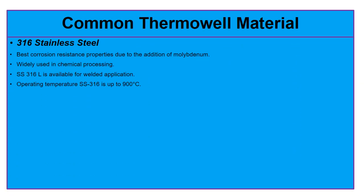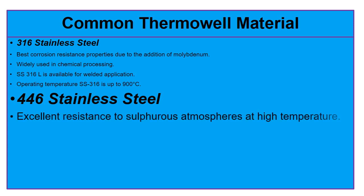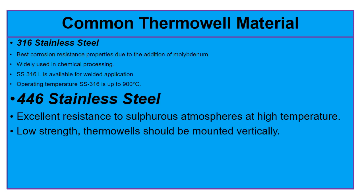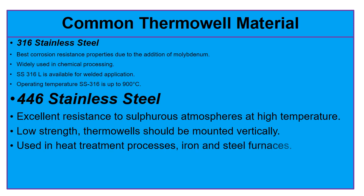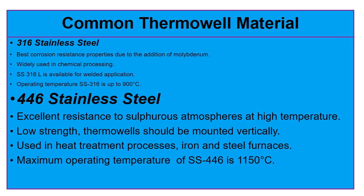Grade 446 stainless steel: SS 446 has excellent resistance to sulfurous atmospheres at high temperature. However, due to its low strength at high temperature, thermowells made from SS 446 should be mounted with the probe vertically. SS 446 is used in heat treatment processes and iron and steel furnaces. The maximum operating temperature of SS 446 is 1150 degrees centigrade.